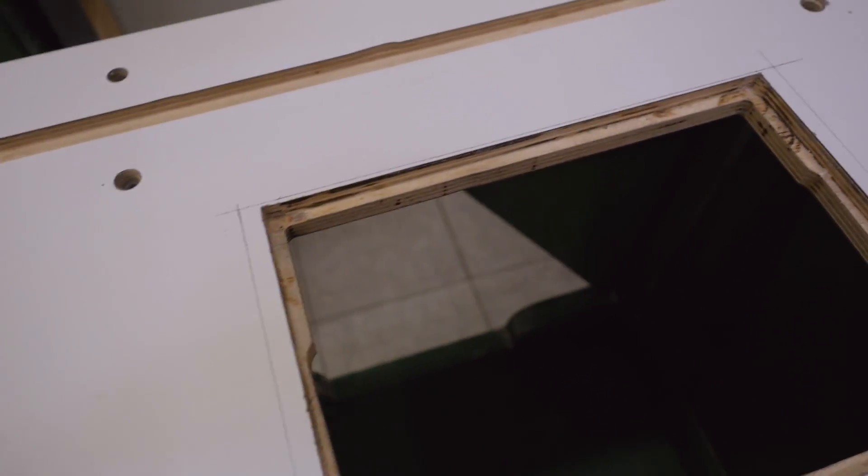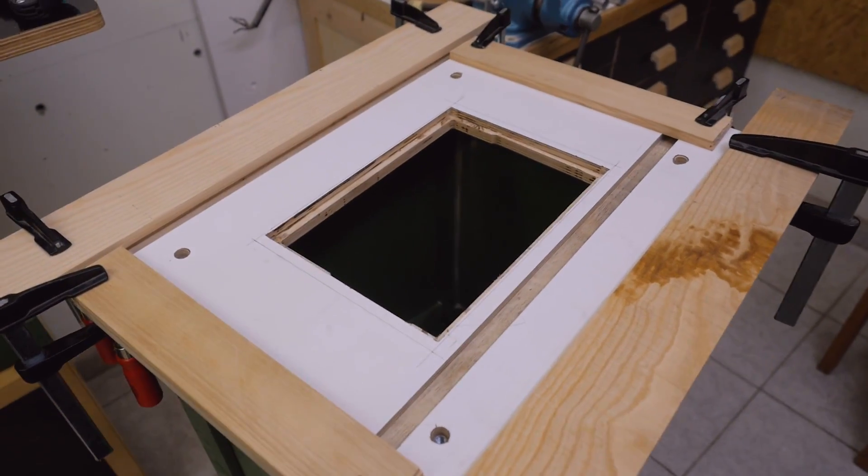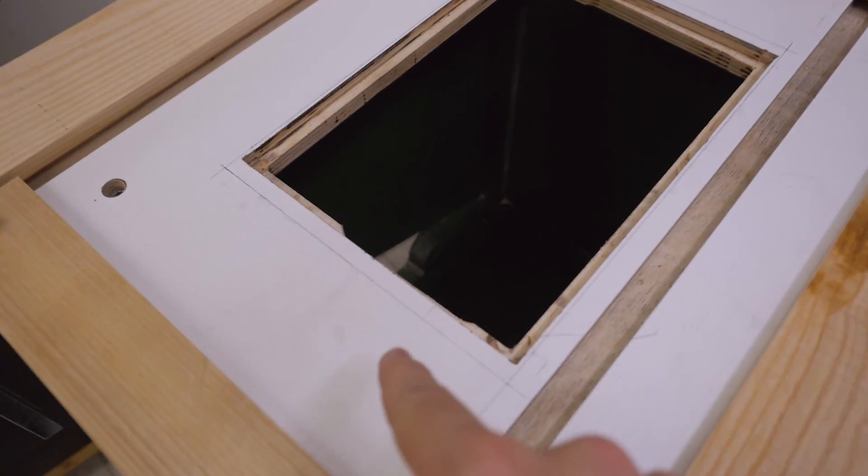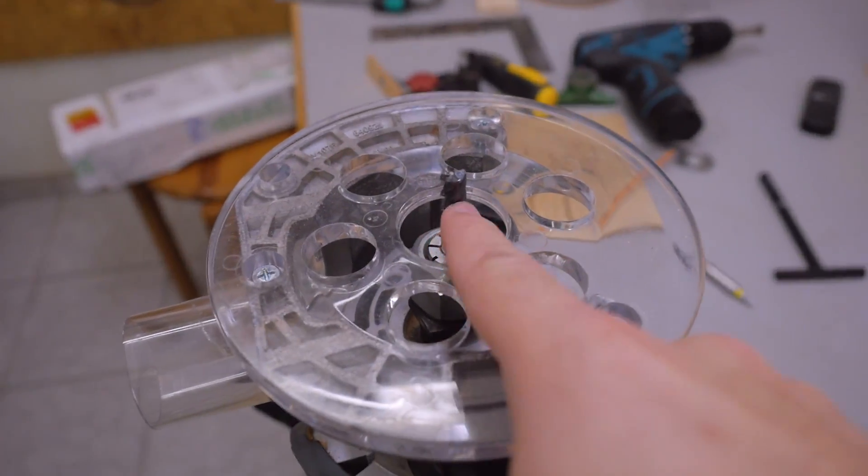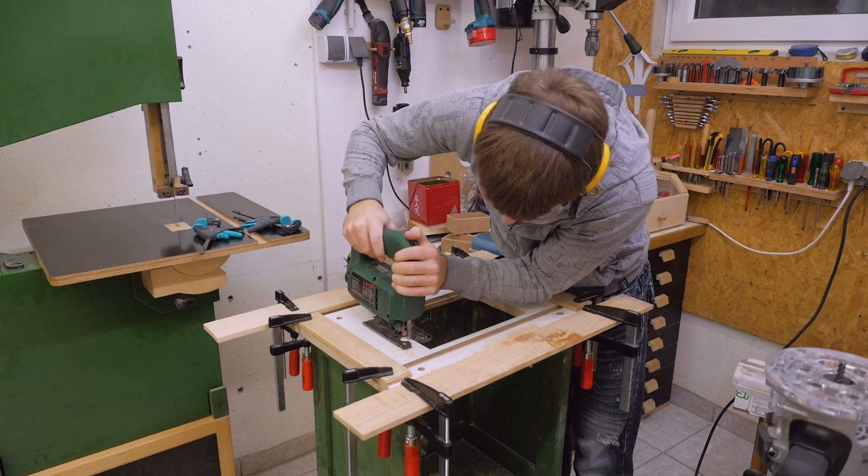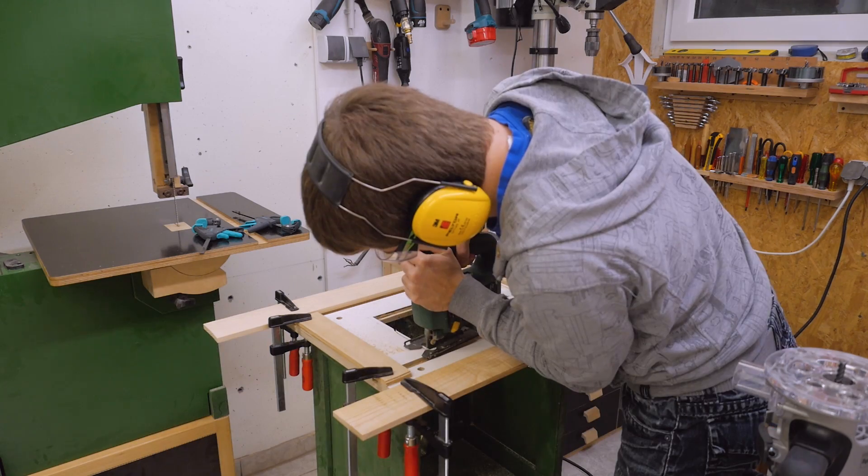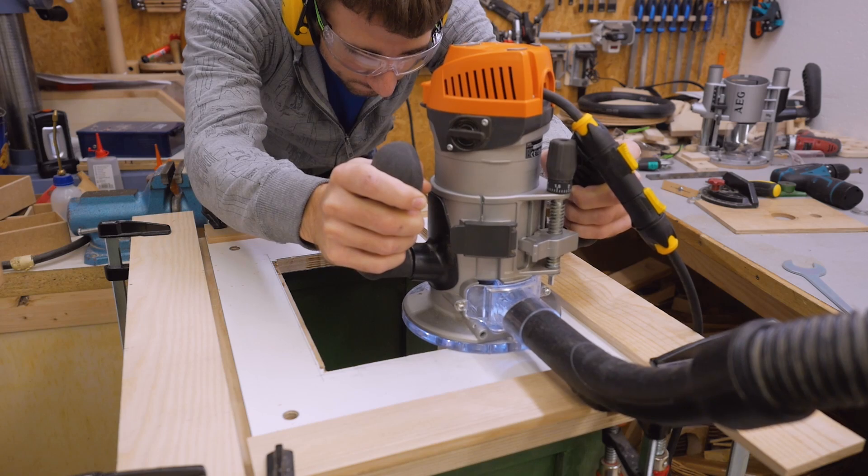Now I want to cut a new hole for the insert plate. I clamped on guides on all sides, and the distance between the line where I want to cut and the guide is the same as from the router bit edge to the router base. I removed some material with the jigsaw first and then routed all around the guides.